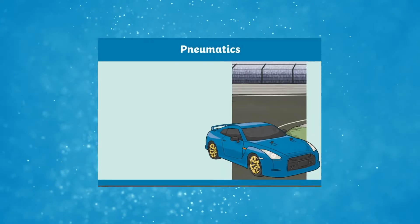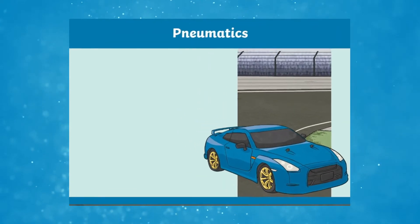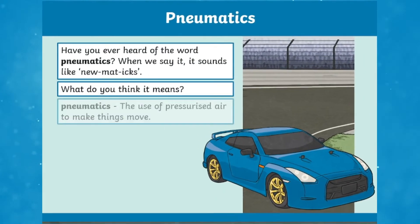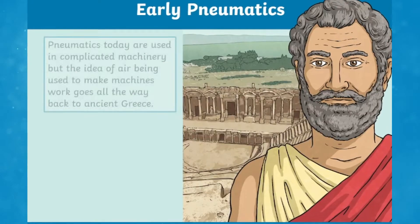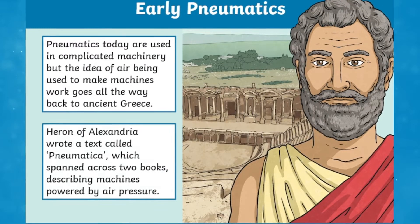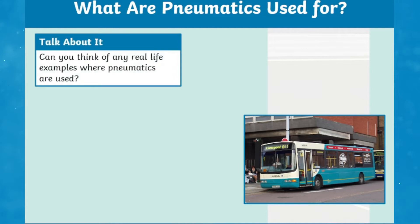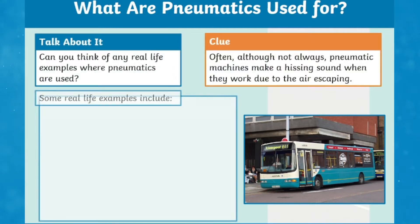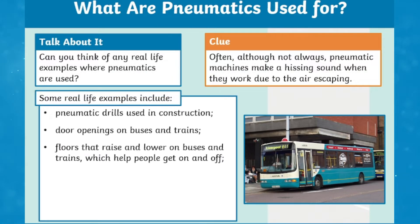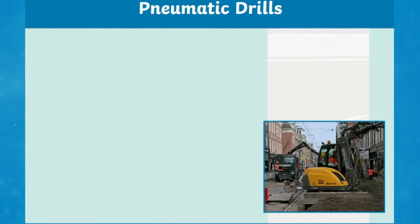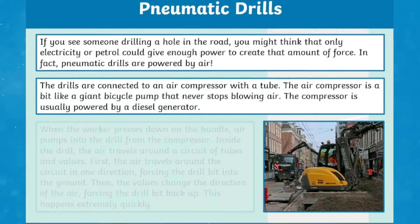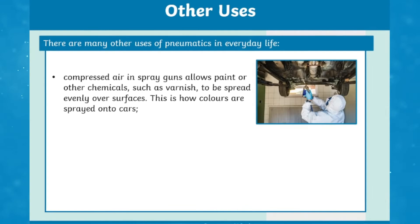Check this out. This PowerPoint is an ideal way to introduce your Key Stage 2 children to the scientific concept of pneumatics. It explores the origins of this and gives students opportunities to think about how it is used in the modern world today. It will explore pneumatics in more detail with some of the examples and talk about the advantages it has.